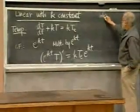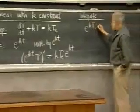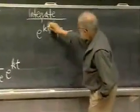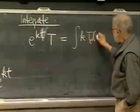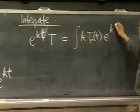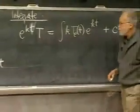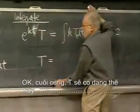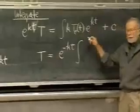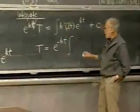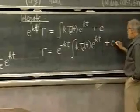Okay, and now finally we're going to integrate. We're going to get e to the kt times T is equal to the integral of kT_e — I'll note that it's a function of t — times e to the kt. And I'll put in the arbitrary constant explicitly. So the final solution T will be e to the negative kt times k times that external temperature function integrated times e to the kt, plus c times e to the negative kt.